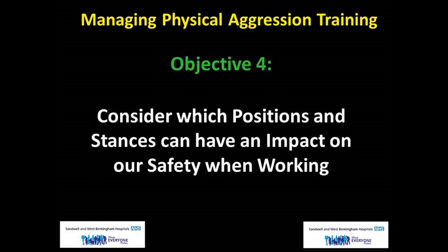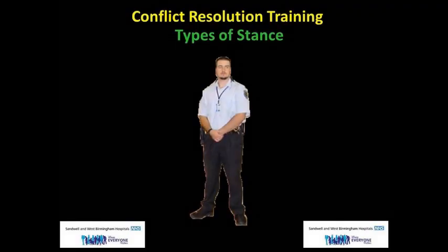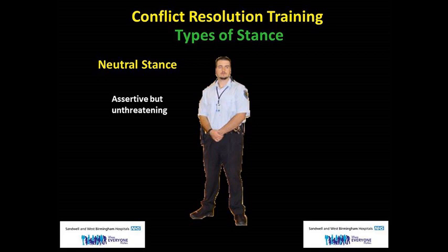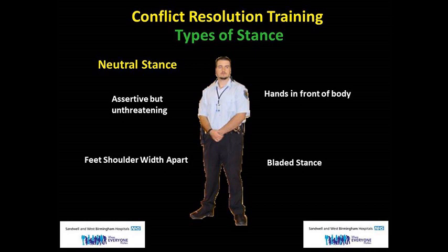Objective 4: consider which positions and stances can have an impact on our safety when working. Observe the following diagram. This is called neutral stance — the person is assertive but unthreatening, hands are in front of the body and the feet are shoulder width apart, with a bladed stance meaning one foot is slightly in front of the other. This stance is useful to adopt when somebody is at the lower level of the aggression ladder.